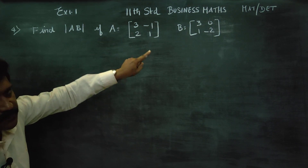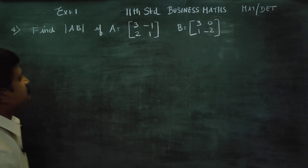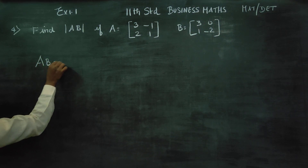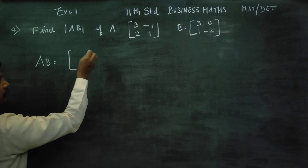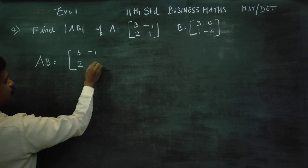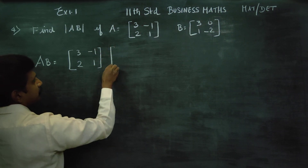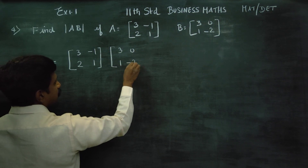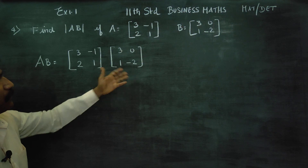A matrix is given and B matrix is given. A matrix is: 3, minus 1, 2, 1. B matrix is: 3, 0, 1, minus 2. A matrix is ready, B matrix is ready.